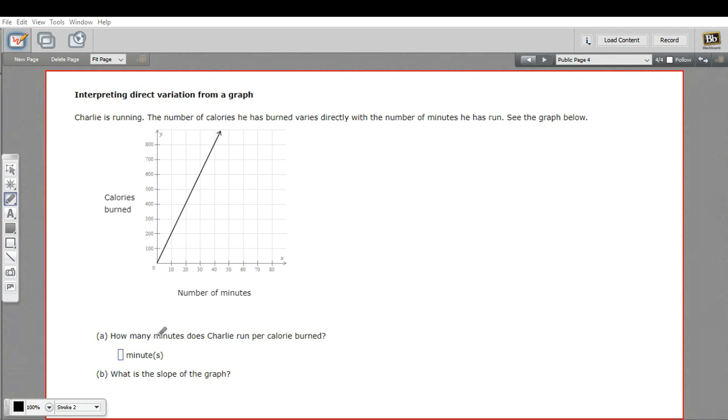What we want to find out is how many minutes does Charlie run per calorie? I always think of per as the bar in a fraction or divided by. So we want minutes divided by calories or minutes per calorie. So how many minutes does it take to burn one calorie?